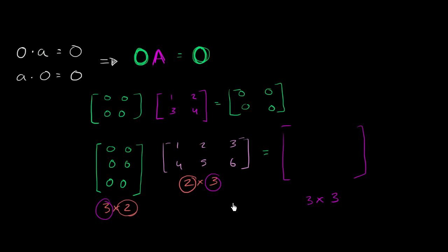So it's going to be a 3 by 3 matrix. And I'll leave it up to you to verify that all the entries here are going to be, all of the entries here are going to be 0. And it makes sense.